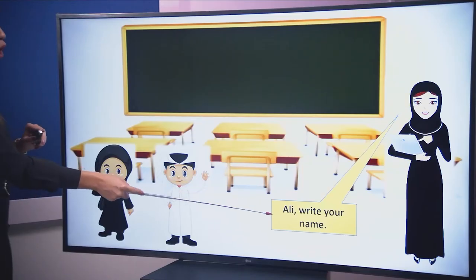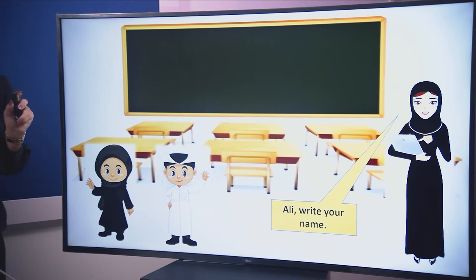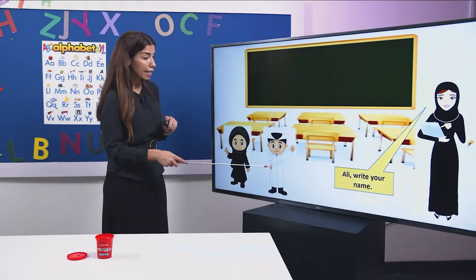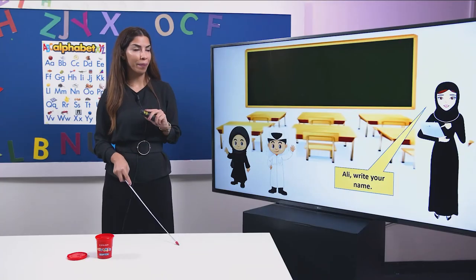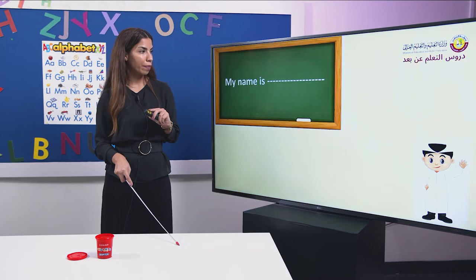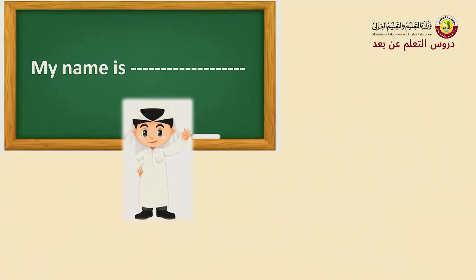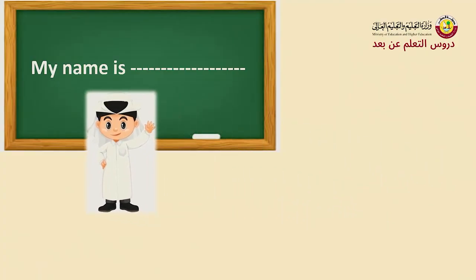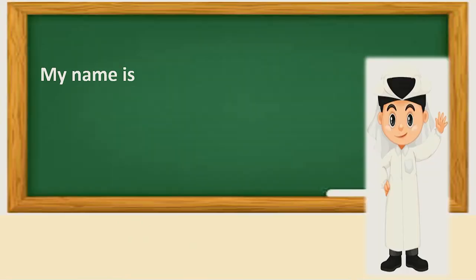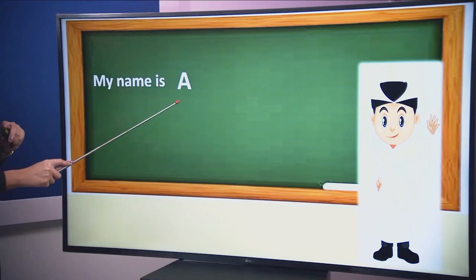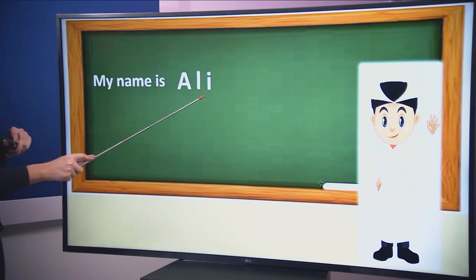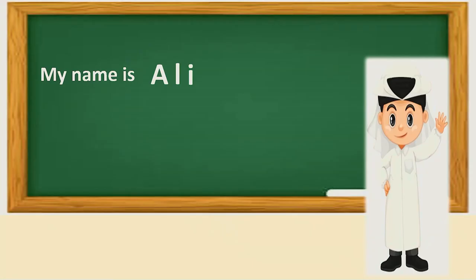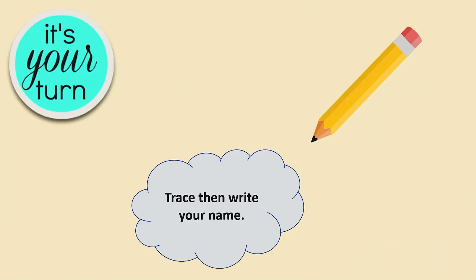Ali, write your name. Now, the teacher is asking Ali to write his name. Ali will go to the board and he will write his own name. My name is… A-L-I. Ali.